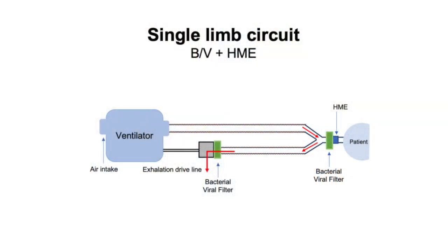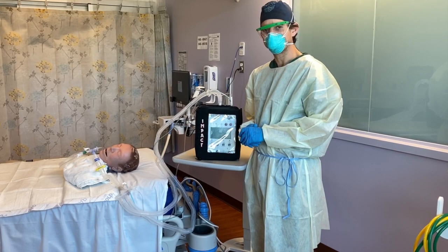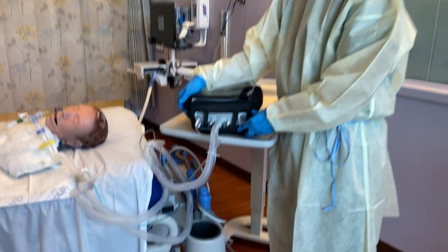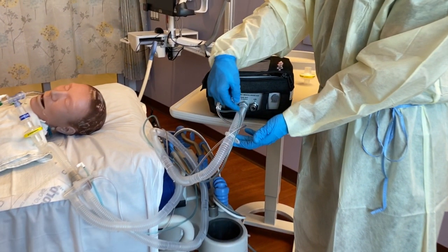Now we'll shift gears and talk about single limb circuit setups. We've chosen a commonly encountered single limb circuit setup found on many transport ventilators. This single limb circuit setup uses an active exhalation valve that's controlled by the machine, and is intended to be used on devices with internal PEEP. This compressor-driven transport ventilator uses the single limb circuit setup. Here's the inspiratory limb takeoff, and this is the location where a bacterial viral filter could be placed on the inspiratory limb in a two-filter setup.